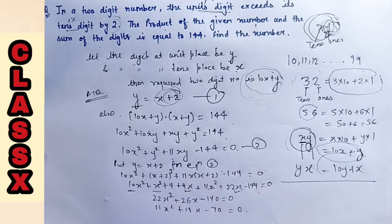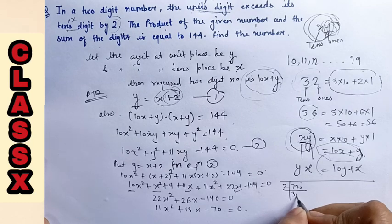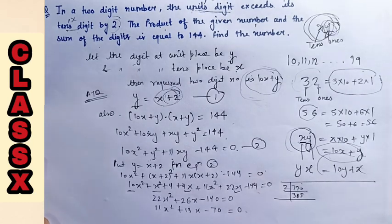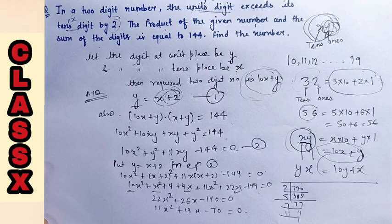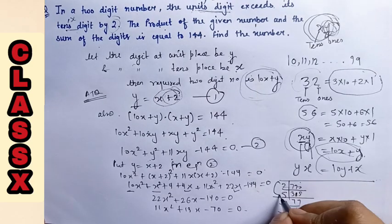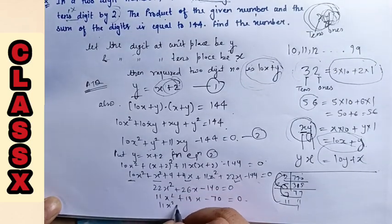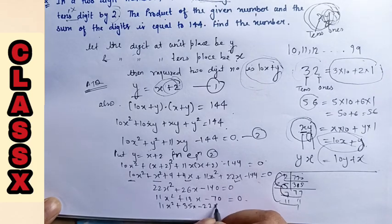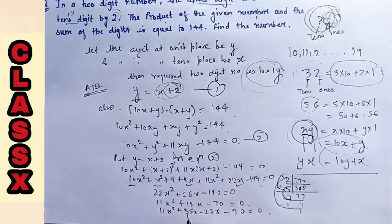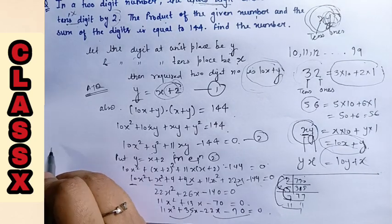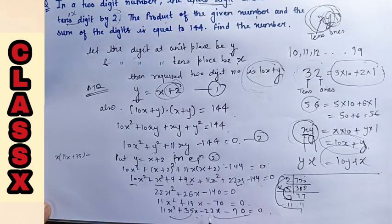Now I have to simplify it using middle term splitting. So 35 and 22, I am writing 11x square plus 35x minus 22x minus 70 equals 0. So now we will take common. Nothing is common except x and minus 2 is common.